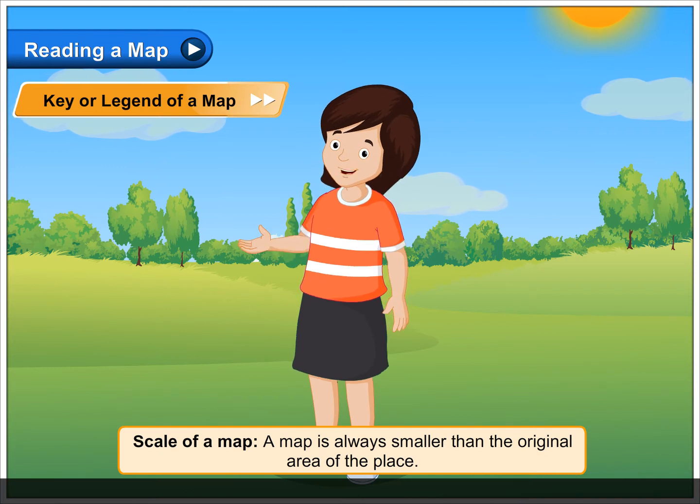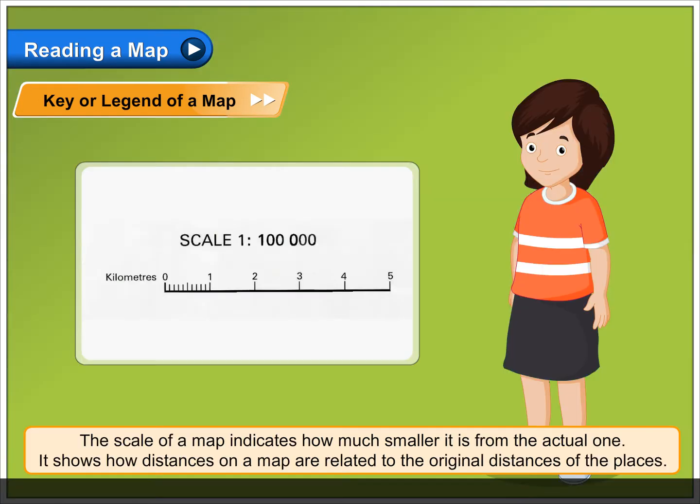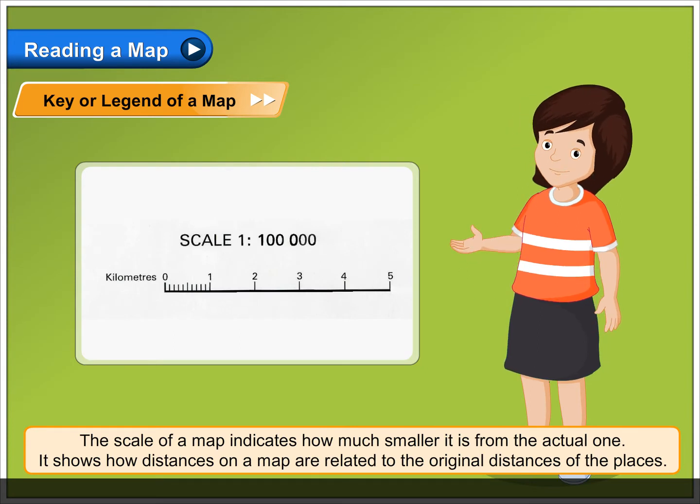A map is always smaller than the original area of the place. The scale of a map indicates how much smaller it is from the actual one.